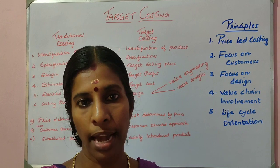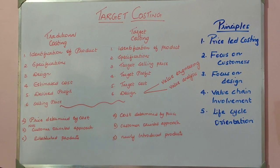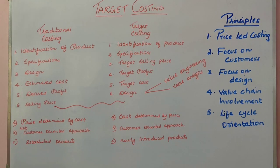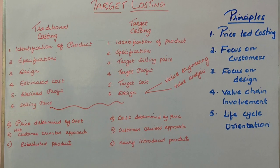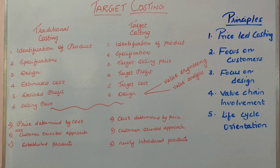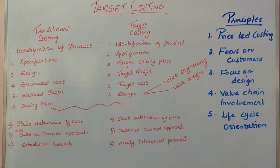Let us take an example. Imagine there is a company that has identified the products it wants to manufacture. The next step the company does is decide the specifications for the product. Once the specifications are decided, it sends the identified product with the specified features to the design team. The design team designs the product. Once the design is over, the company sends this design to the cost accounting department, which estimates the cost of the design.